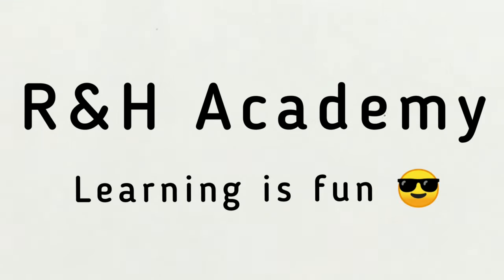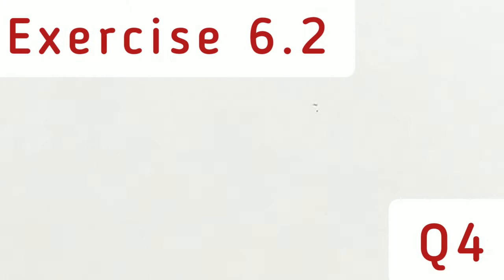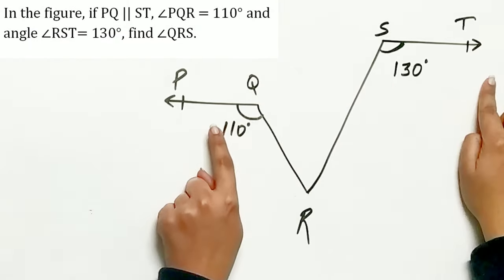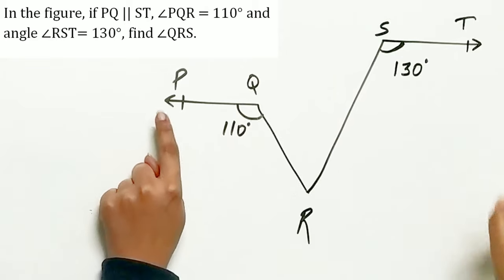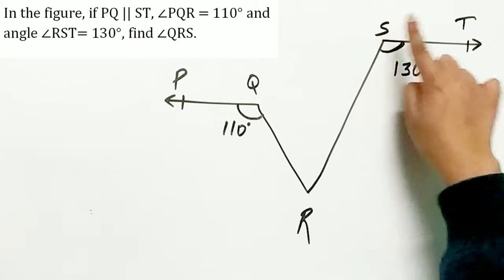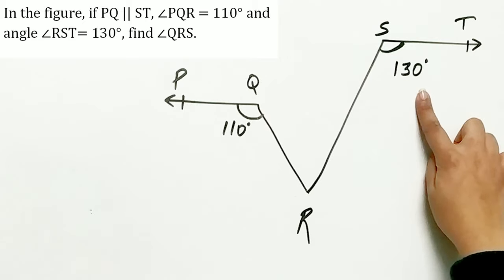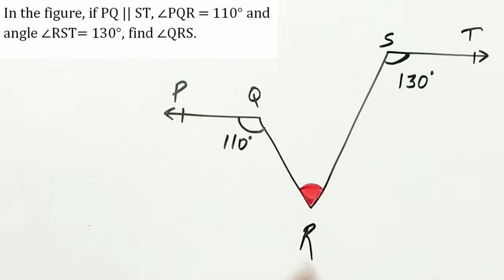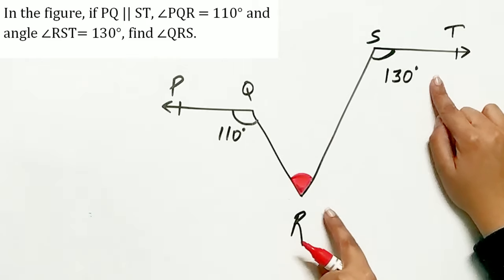Welcome to RMH Academy channel. Question 4 of XI 6.2 says in figure 6.31 if PQ is parallel to ST, angle PQR is 110 degrees and angle RST is 130 degrees, find angle QRS. We will draw a line parallel to ST through R.